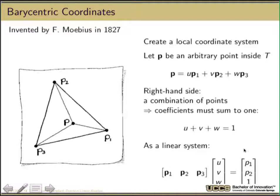Barycentric coordinates, which we've also briefly talked about before, were invented by Mobius in 1827, and they define a local coordinate system. Given any three points, they define a coordinate system that I can use by taking some coefficient U times the first point plus V times the second point plus W times the third point, and we're also going to add the constraint that the coefficients have to sum up to equal one.